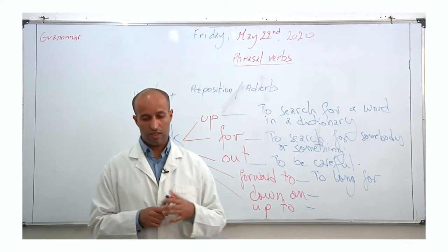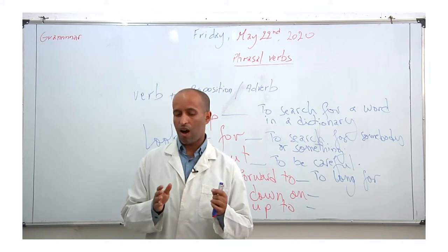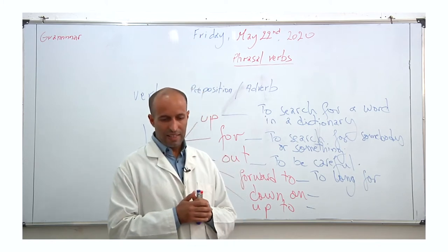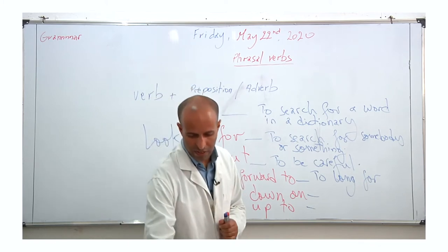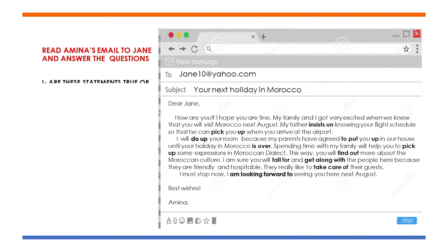As you can see, the bold-type words are phrasal verbs. Let's deal with the first exercise: are these statements true or false? Justify. The first question: Jane will travel to Morocco by boat.